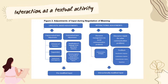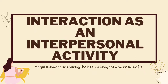Comprehension checks occur when a native speaker ensures that the learner or the less proficient speaker has understood the message by asking questions such as 'Do you understand?' or 'Am I clear?' A clarification request, on the other hand, is when the learner or the less proficient speaker doesn't understand something and asks for clarification. Repetition occurs when the more proficient speaker repeats some part of the sentence. And in a confirmation request, the learner wants to confirm the statement or the sentence of the speaker.